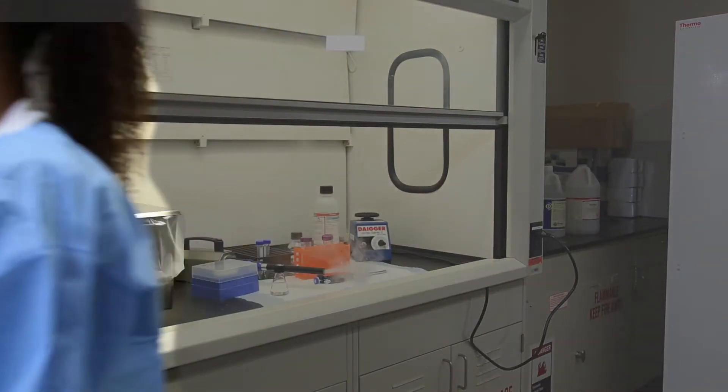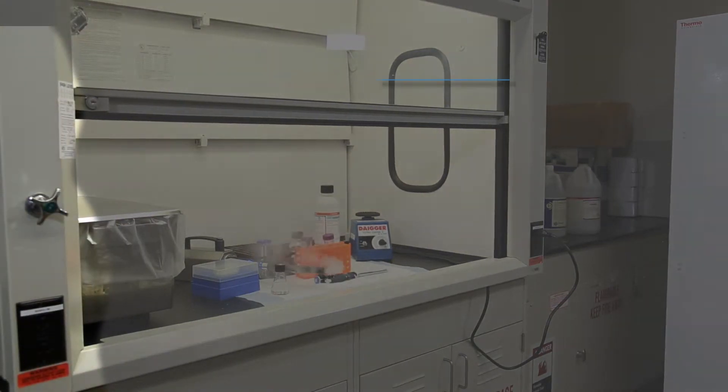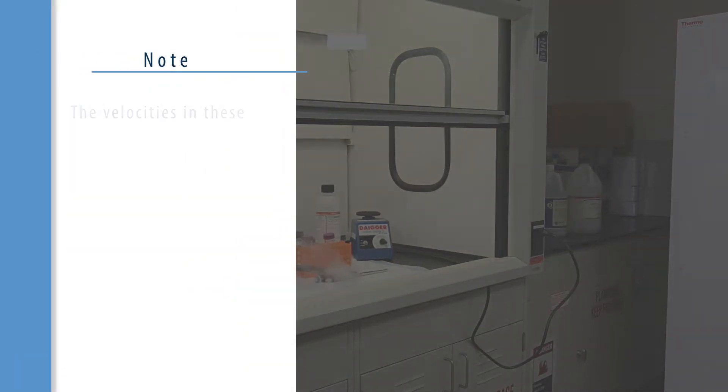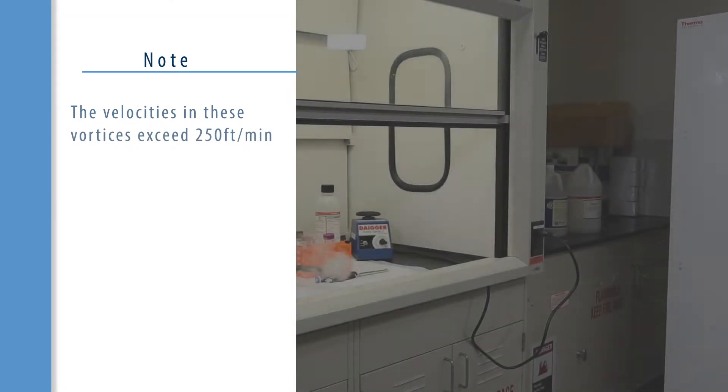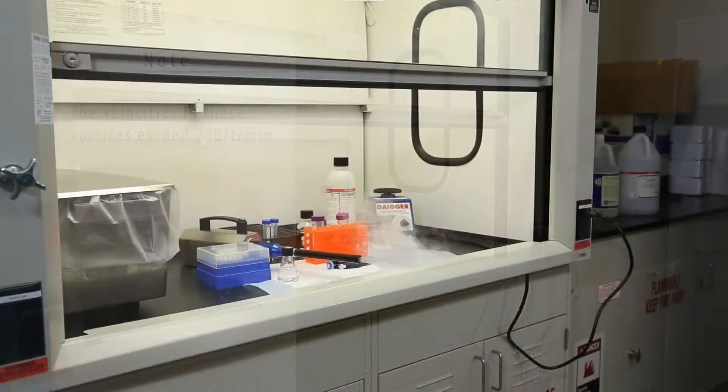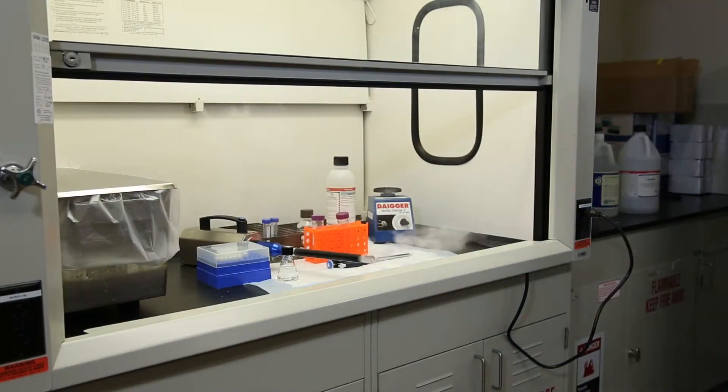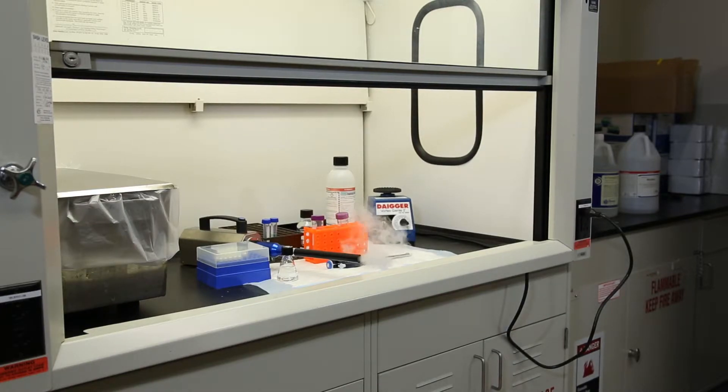Wakes or vortices form behind a person who is walking and the velocities in these vortices exceed 250 feet per minute. When a person walks in front of an open fume hood, the vortices can overcome the fume hood face velocity and pull contaminants out of the fume hood.